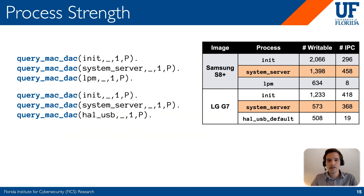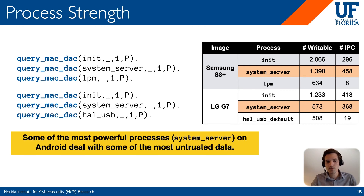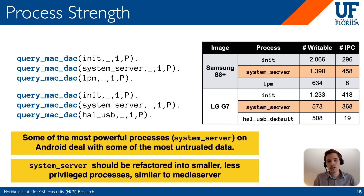One thing we can do with Big Mac is understand process strength — that is, for the two images analyzed, the top three processes and their strength, meaning how many things they can write to, including files and IPCs. What this highlights is that system server, which largely interacts with applications, is very powerful. If there were a bug in system server — which is a monolith — it could be compromised and further compromise parts of the system that implicitly trust it. Our recommendation is that system server should be refactored out of monolith form, similar to what was done with media server, which was broken up into separate processes.